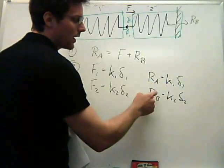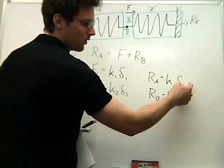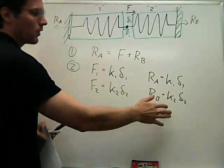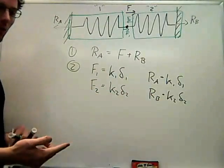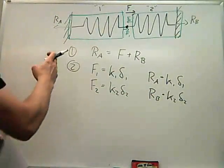But I also don't know delta 1 and delta 2. So now I've got four unknowns and three equations, so I need one more equation to finish this up.